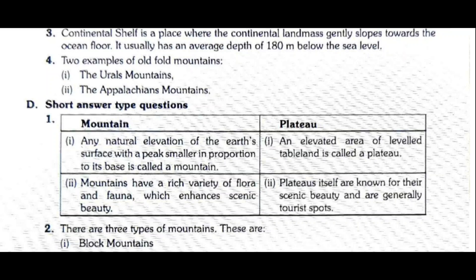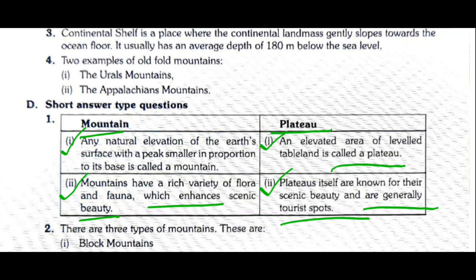Section D — short answer type questions. Question 1: What is the difference between a mountain and a plateau? Any natural elevation of the earth's surface with its peak smaller in proportion to its base is called a mountain. An elevated area of leveled table land is called a plateau. Mountains have a rich variety of flora and fauna which enhances their scenic beauty, while plateaus are known for their scenic beauty and are generally tourist spots.